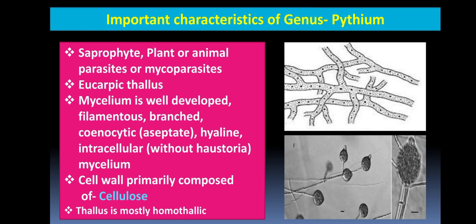The hyphae are intracellular in nature — they grow directly into the host cell by puncturing and penetrating it to uptake nutrients, without producing haustoria. The cell wall is primarily made up of cellulose. The thallus is homothallic, meaning both male and female sex organs are produced on the same thallus, making it a homothallic fungus.